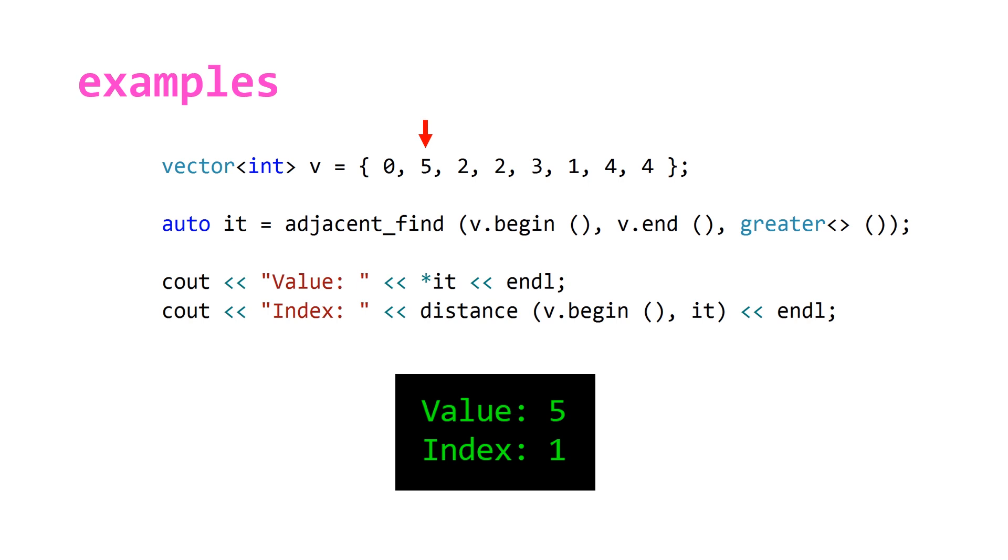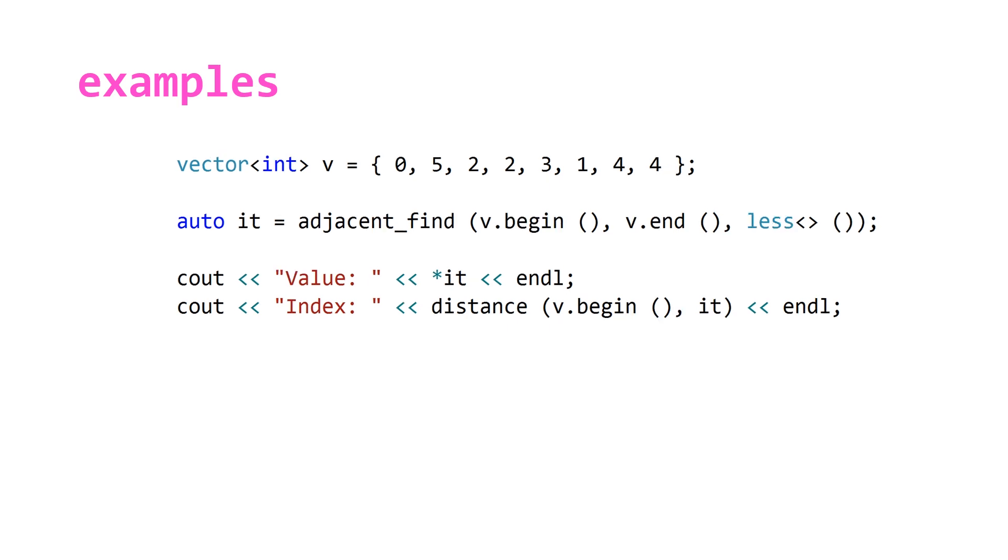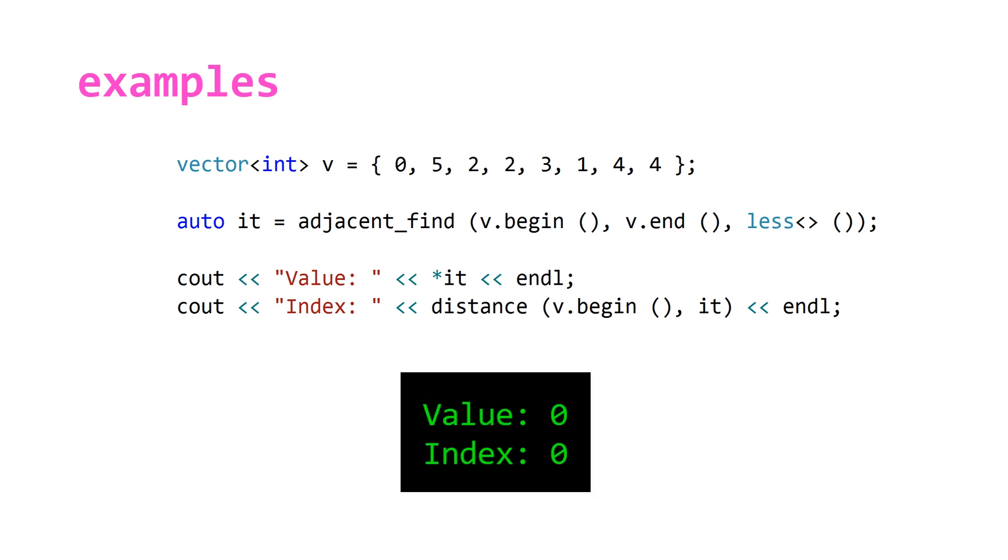So greater is a predicate that returns true if the first value is greater than the second value. This makes adjacent_find a little bit more useful. And as well as there being a greater predicate, there is also a less predicate. So you can imagine what this does. If we run this piece of code, it's going to return us a value of 0 and index 0, which is going to be an iterator pointing to the first element.